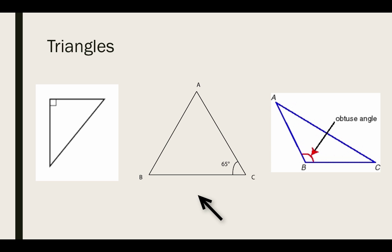In the middle we have an acute triangle as you see the angle is 65 degrees which is less than 90 degrees. And to the very right we have an obtuse angle which means this is an obtuse triangle.